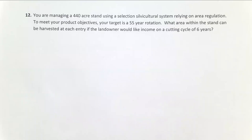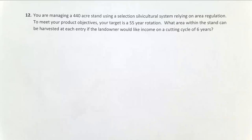I have some parameters here. I have a 440-acre stand, and my goal is a 55-year rotation. I'm familiar with my species and how fast they grow in my region, so I know that's going to work ecologically. The landowner is interested in trying to get income from this every six years, so that's going to be the cutting cycle of about six years.